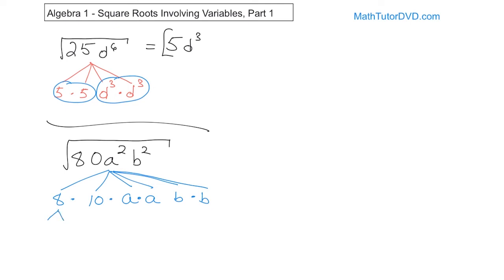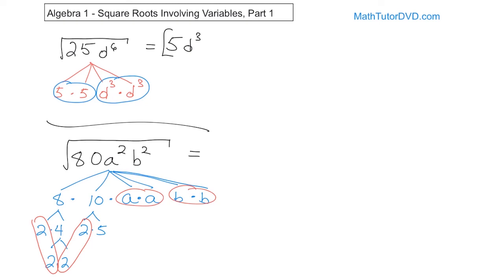8 can be written as 2 times 4, 10 as 2 times 5, and the 4 as 2 times 2. Everything else is prime. Now circle pairs: a pair of 2s here, a pair of 2s here. The 5 is orphaned. We also have a pair of a's and a pair of b's. Pull out a single 2 from each pair of 2s — that gives 2 times 2, which is 4. Pull out a single a and a single b. Under the radical goes everything left: just the 5. So the answer is 4ab√5.